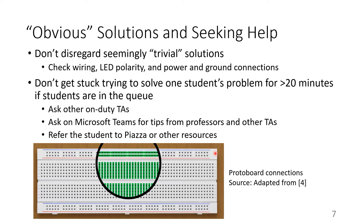It's also important to not get stuck trying to solve a single student's problem for more than 20 minutes if other students are waiting in the queue, because those students might have a problem that can be solved in two minutes and it'll allow them to continue on with the lab. If you're having trouble solving a student's problem, you can ask other on-duty TAs for their advice. And if they can't help you, you can ask on Microsoft Teams for tips from professors and any other TAs who may not be in the BlueJeans meeting. You can also refer the student to Piazza or other resources such as their previous course textbooks, their lab materials, or any online resources you might be aware of.